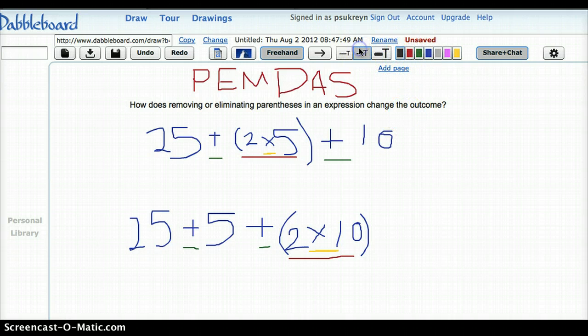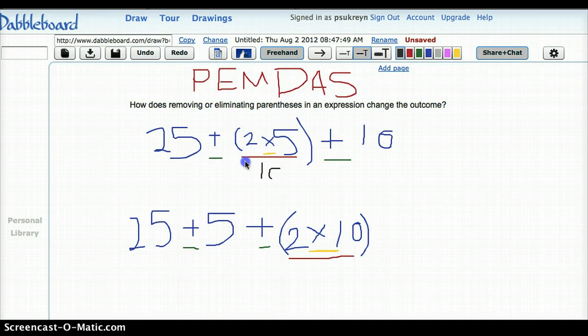So let me go, I'll use black here. All right, so 2 times 5 is 10. Okay, so I've done my parentheses and my multiplication. I have no division.